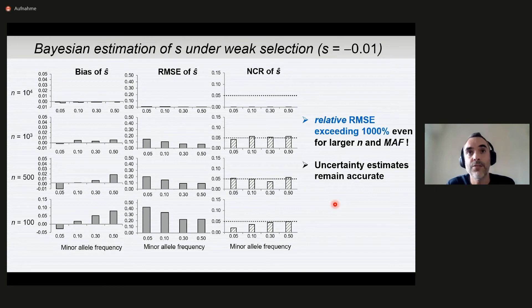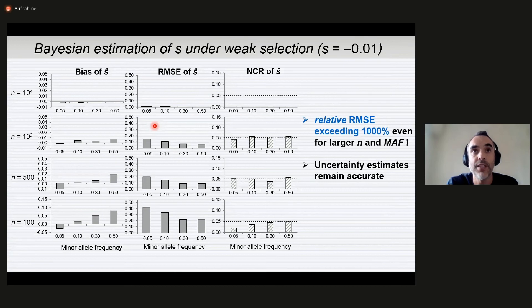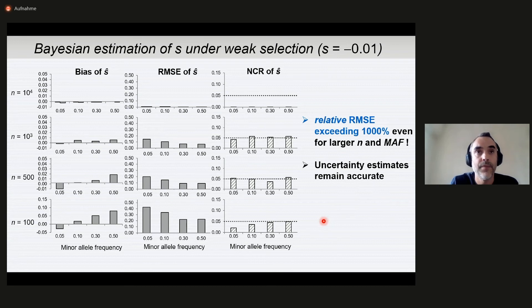In the case of weak selection, as we saw previously for the neutrality test, the estimation of the selection coefficients gets virtually impossible. The relative root mean square error is in the order of 10 times larger than the value of the selection coefficient itself. So really there is no hope in estimating the selection coefficient under weak selection. And the good news is that the uncertainty estimates remain accurate.